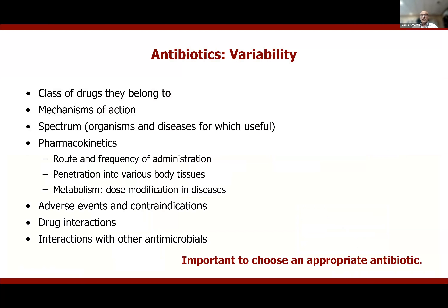These antimicrobials have different characteristics. Many belong to different classes with separate mechanisms of action and very different spectra of organisms or diseases for which they can be used. Their pharmacokinetics differ — some can be absorbed orally, others cannot. Volume of distribution, the organs they reach, whether they penetrate the CNS — all of this varies. Different antimicrobials therefore have different routes of administration, frequency of administration, and penetration into different body organs.